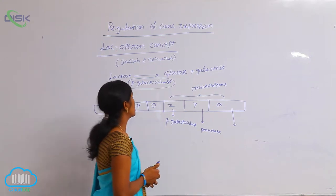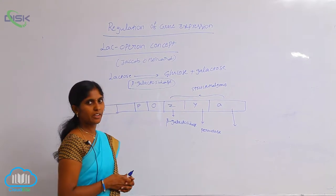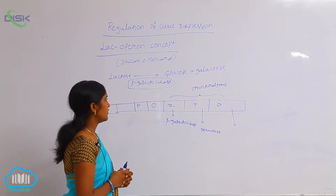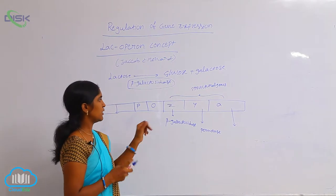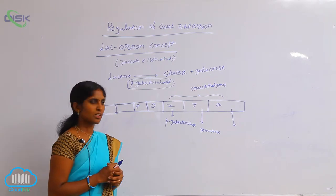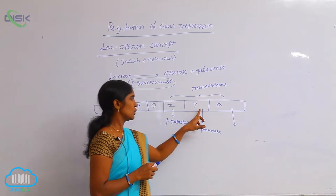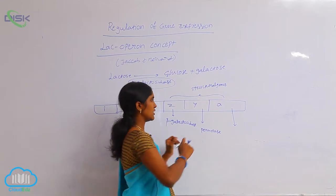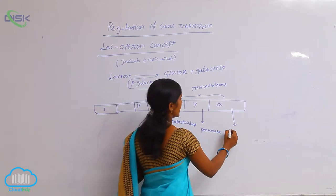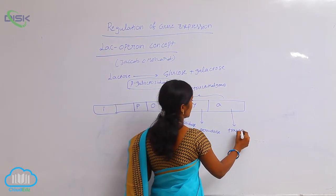Three structural genes are present in the lac operon: Z, Y, A. The Z structural gene is responsible for production of beta-galactosidase enzyme. Y is for permease enzyme, and A is for transacetylase enzyme.